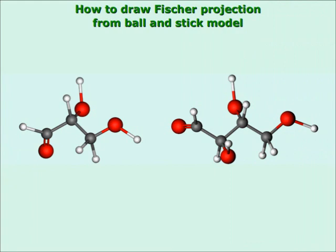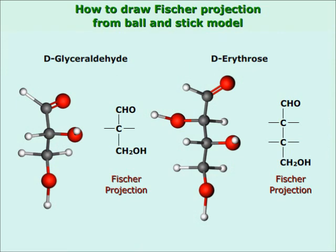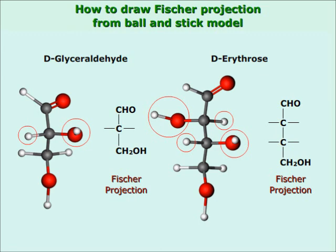I will explain how to draw the Fischer projection of simple sugars from their ball-and-stick model. This is D-glyceraldehyde and this is D-erythrose. The carbon atoms are arranged in a zig-zag pattern. The models are arranged spatially such that the carbon chain can be viewed vertically. Remember that the carbon of the CHO group should be at the top because it is the first carbon as per IUPAC rules. These are the groups that will be horizontal groups in the Fischer projection.